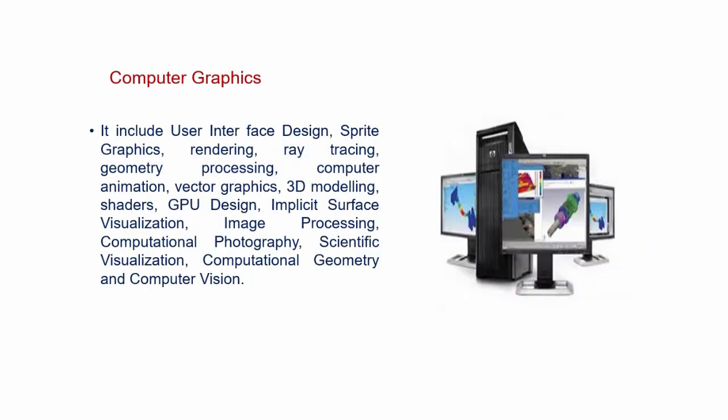Computer graphics includes interface design, sprite graphics, rendering, ray tracing, geometry processing, computer animation, vector graphics, 3D modeling, shaders, GPU design, implicit surface visualization, image processing, computational photography, scientific visualization, computational geometry, and computer vision. These are the fields in which computer graphics is involved in the creation of objects or images on screen.